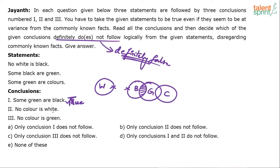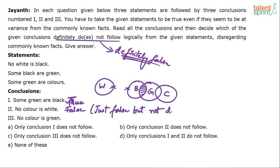Second conclusion: no color is white. While it is true in the basic diagram — white and color do not touch each other — there is the possibility that colors can come and touch white. So no color is white is false, but it is not definitely false. There is a difference between just being false and definitely false.